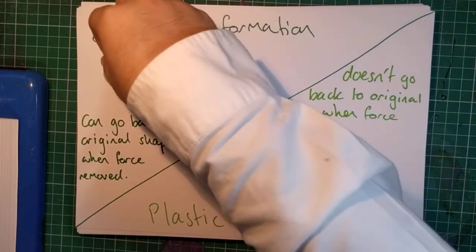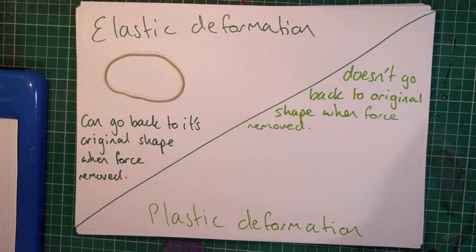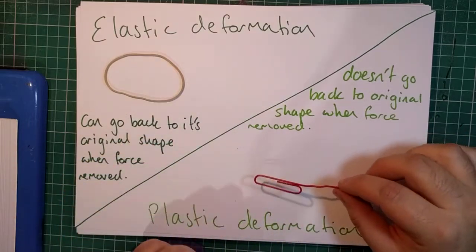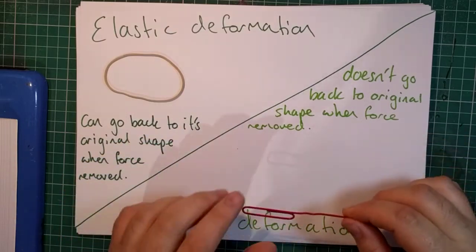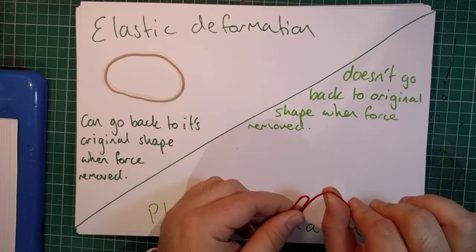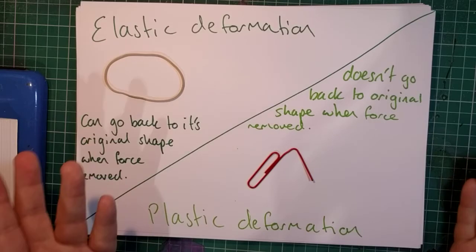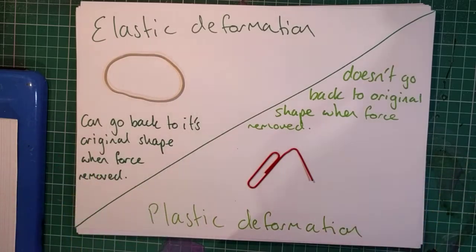On the other hand, there's a type of deformation known as plastic deformation. So this is where an object, I'm not going to attempt to stretch a steel paper clip, but I will bend the steel paper clip. So this is where an object is deformed, like that, but when the force is removed, it does not return to its original shape.